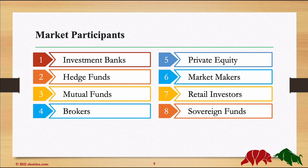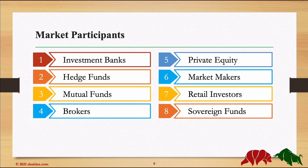Next, we have Hedge Funds — these represent private investment vehicles that manage portfolios of securities and derivative positions employing various strategies. Then we have Mutual Funds, which pool money from several investors and invest in a portfolio of securities. One of the benefits is diversification. For example, if you're investing $10,000, you don't want to put it all in one sector — so you put 20% in technology, 20% in manufacturing, 20% in construction, and so on.